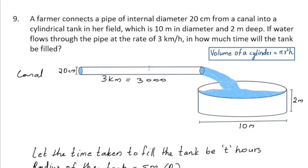This cross section will get filled in 1 hour. That means an amount of water equal to the volume of this cross section will fall into the tank in 1 hour.